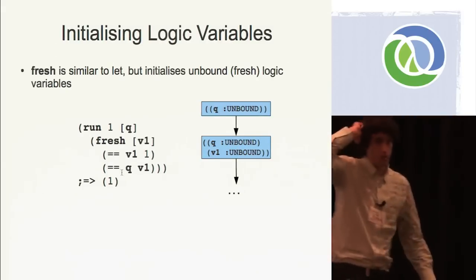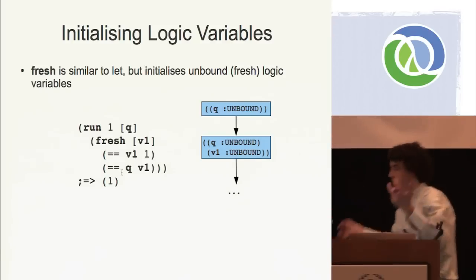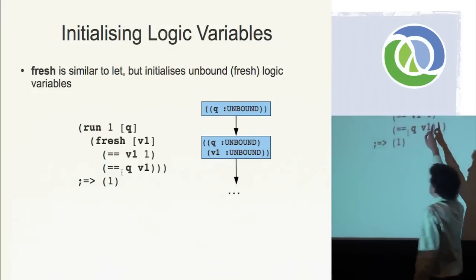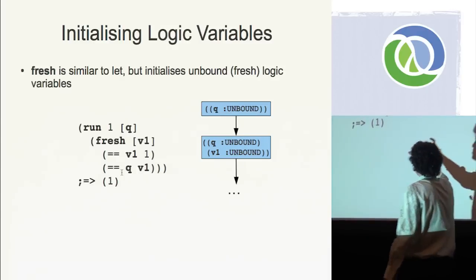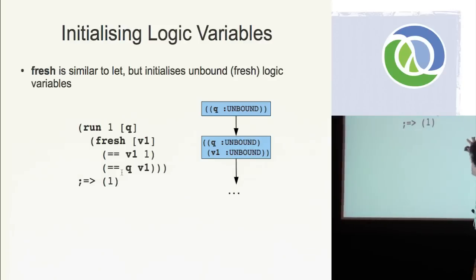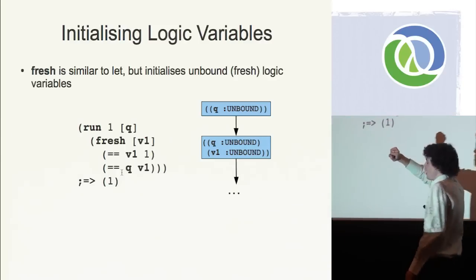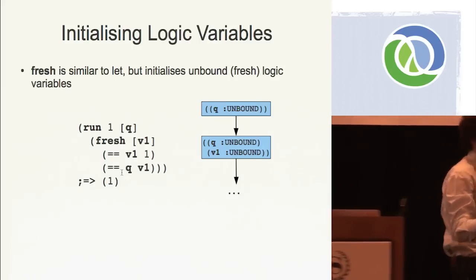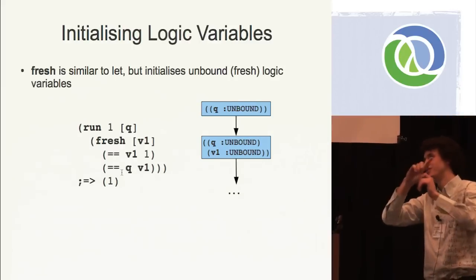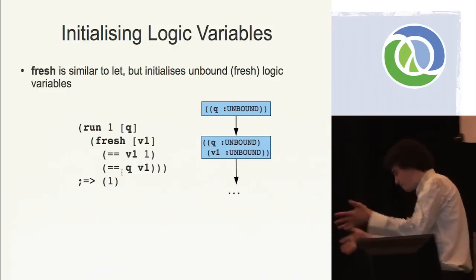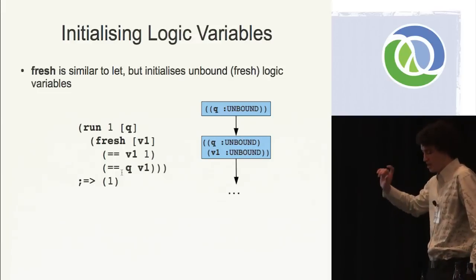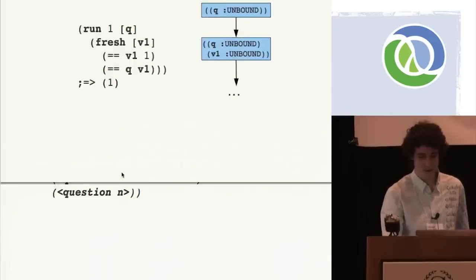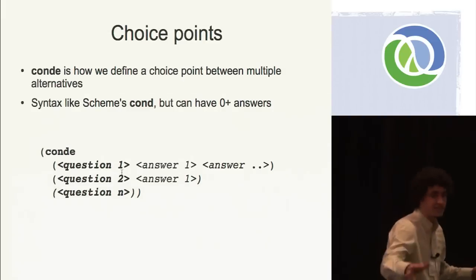How do we introduce more than one logic variable? We have a goal called fresh. It's basically syntactically like let, except it doesn't have pairs of things — it just has names. It delimits the scope of the logic variable. If you come from Prolog, this is kind of weird, because in Prolog to introduce a new logic variable you just start the name of the variable with a capital letter.